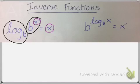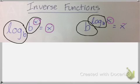And it works the other way around too. If you have an exponential function with base b and you plug in its inverse, which is a logarithmic function with base b, your answer is the number that's left over, so x.